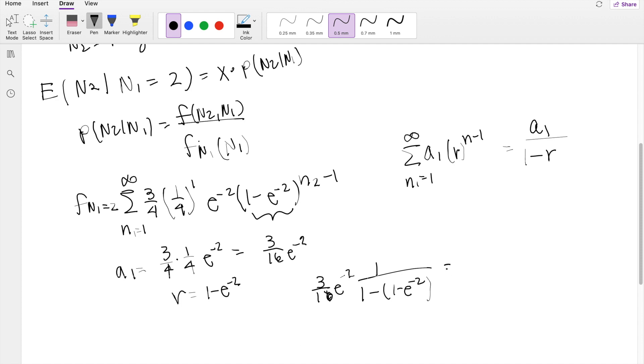Distributing that negative sign, you get 3 over 16, e to the negative 2, divided by 1 minus 1 plus e to the negative 2, so this becomes 0, e to the negative 2 cancels out, so you're actually just left with 3 over 16.